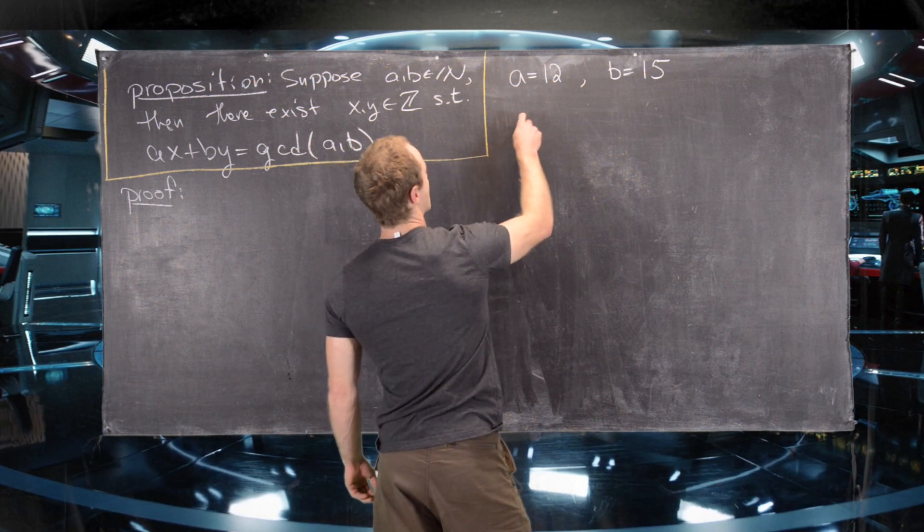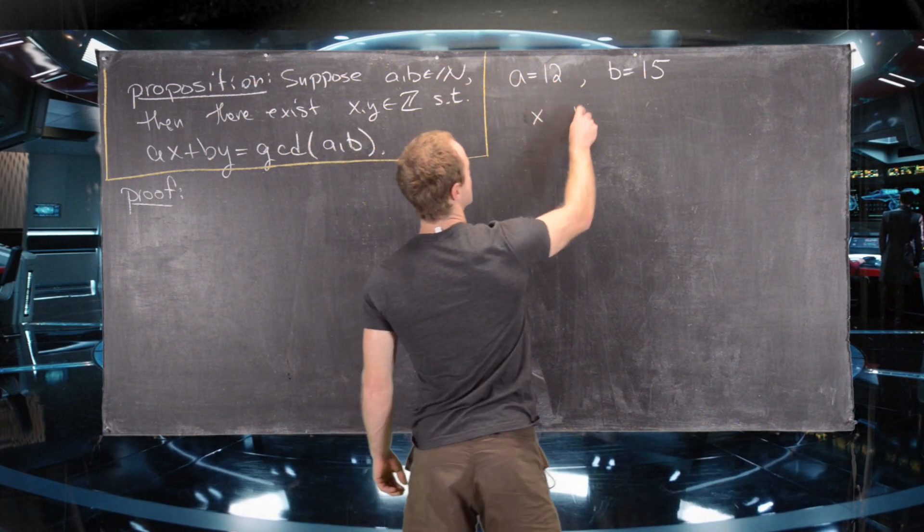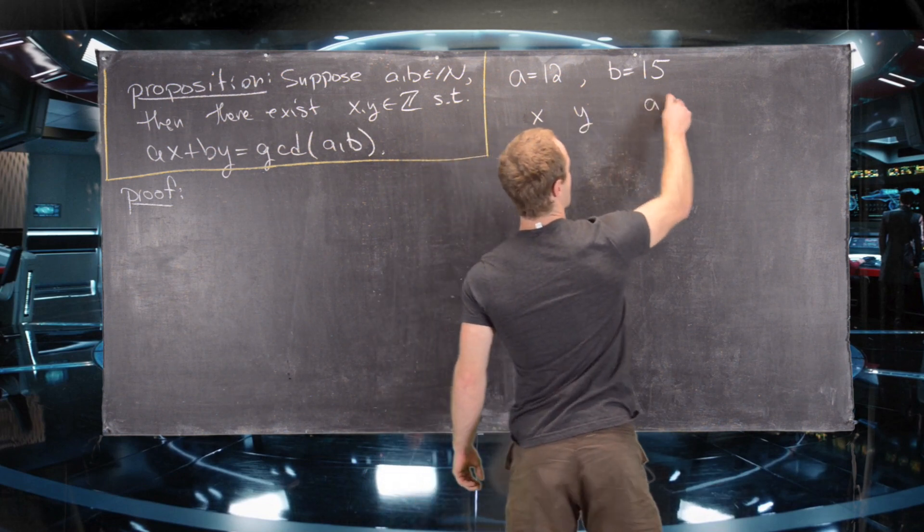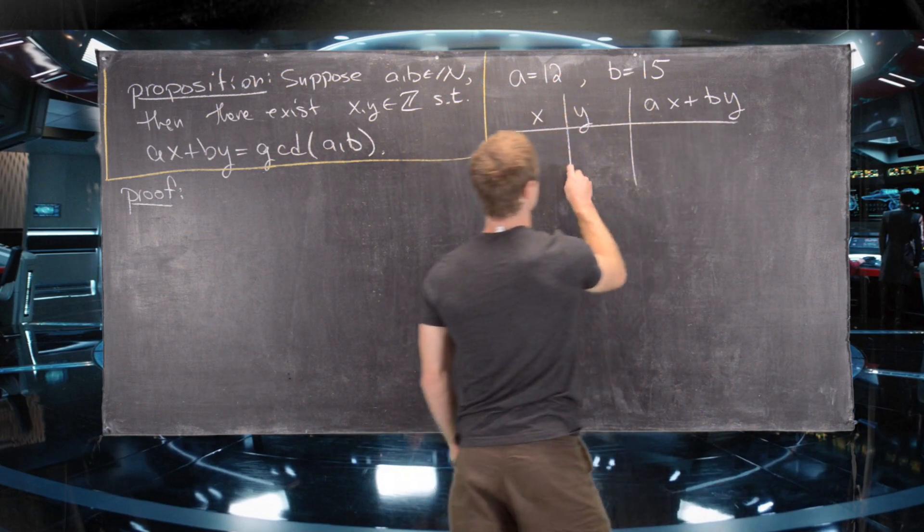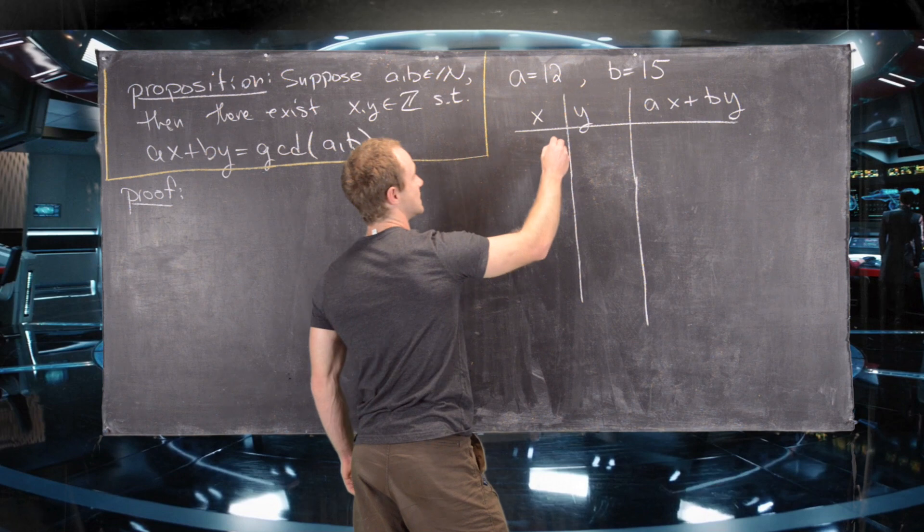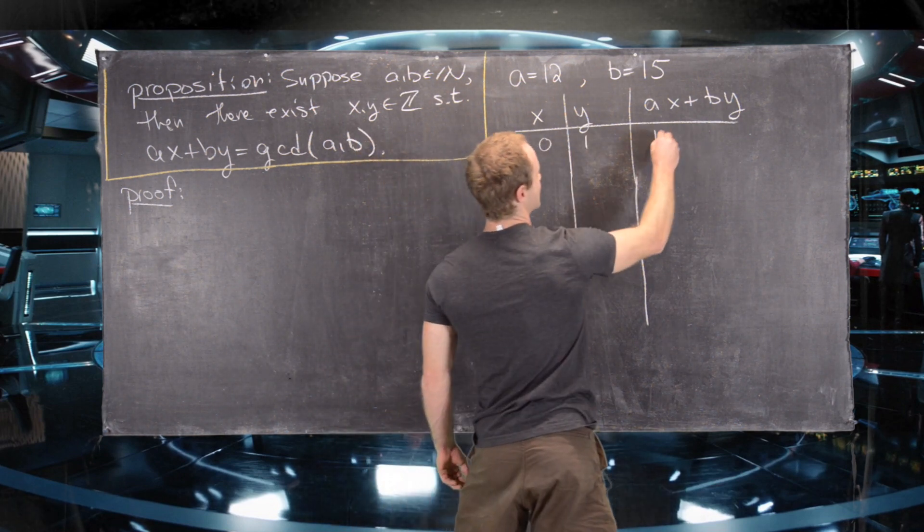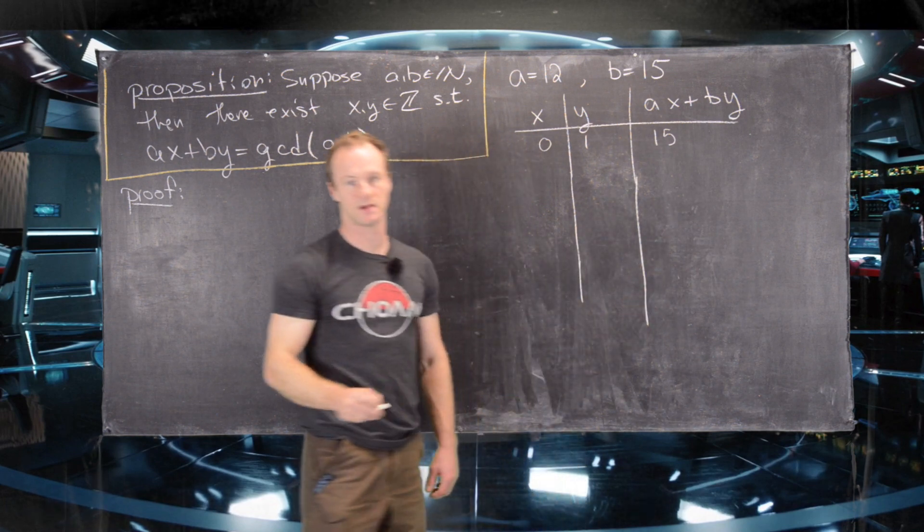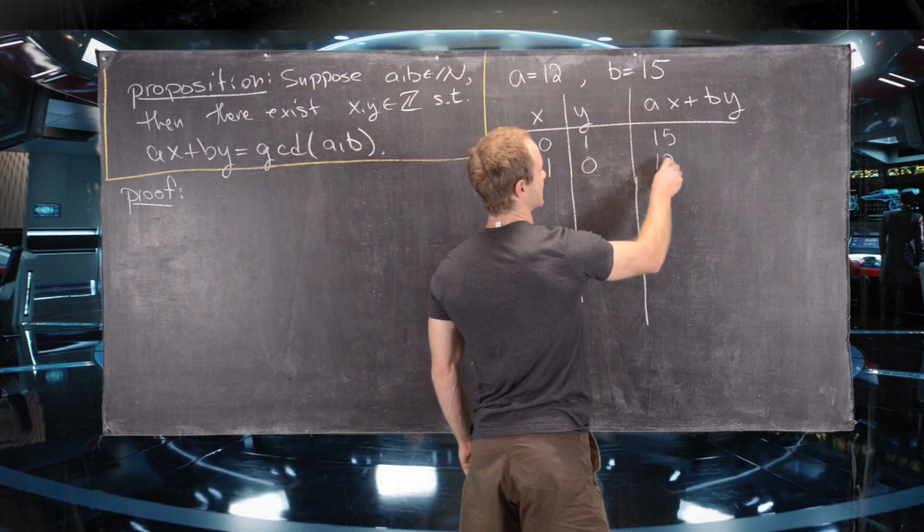So now let's take X and Y and then we'll look at AX plus BY. Let's say first we have 0, 1. That's obviously going to give us 15. And then 1, 0. That's obviously going to give us 12.